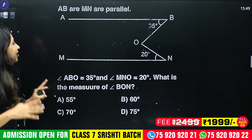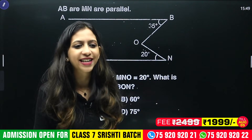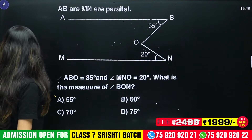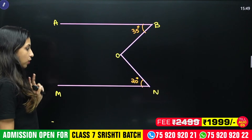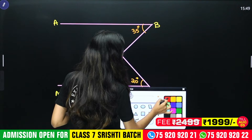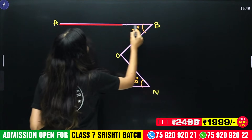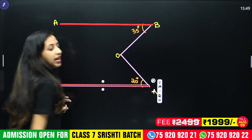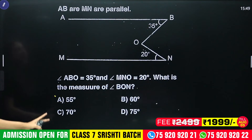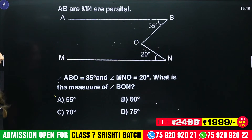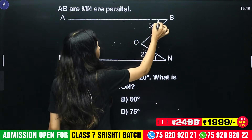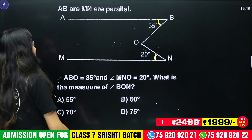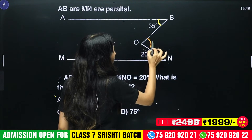This is the next question. AB and MN are parallel. That means we have two parallel lines. AB and MN are parallel — these two lines are parallel. We have angle ABO equal to 35 degrees. Angle MNO is 20 degrees. What is the measure of angle BON? That means we have to find this angle.